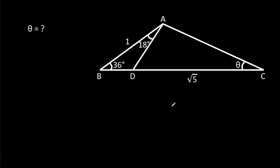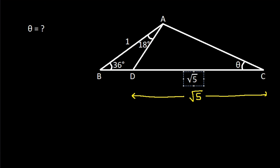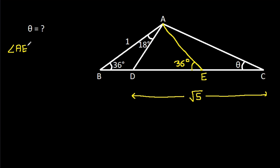So we have CD is root 5. Now from point A, if we make a line — suppose this point is E — such that angle AED is 36 degrees. This is our construction.